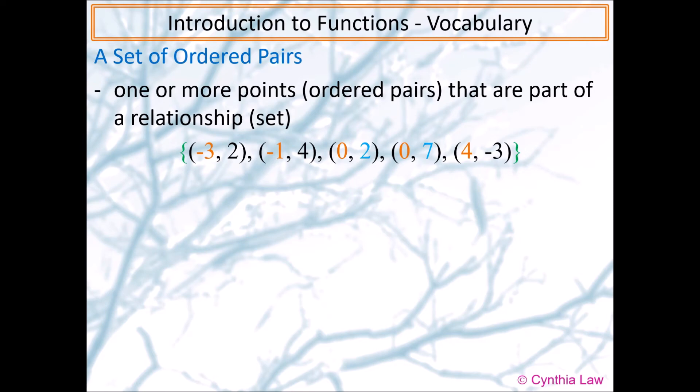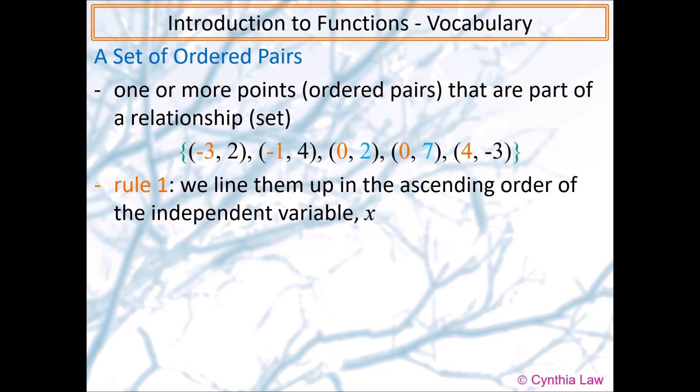So rule number one. When we order these ordered pairs inside a set, we line them up in the ascending order of the independent variable x. So that's the orange numbers. So when you look at the numbers in orange, they are from the smallest to the biggest. So I have negative three, negative one, zero, zero, then the same, and then four. That's rule number one.